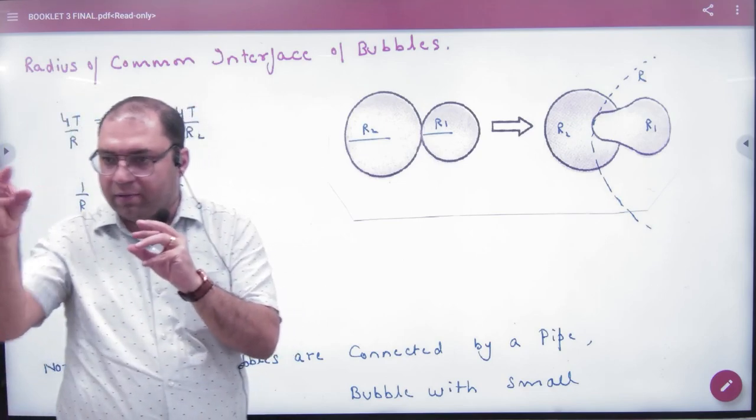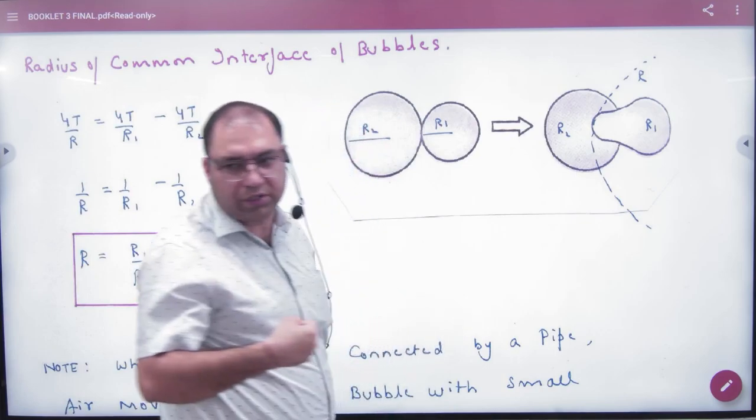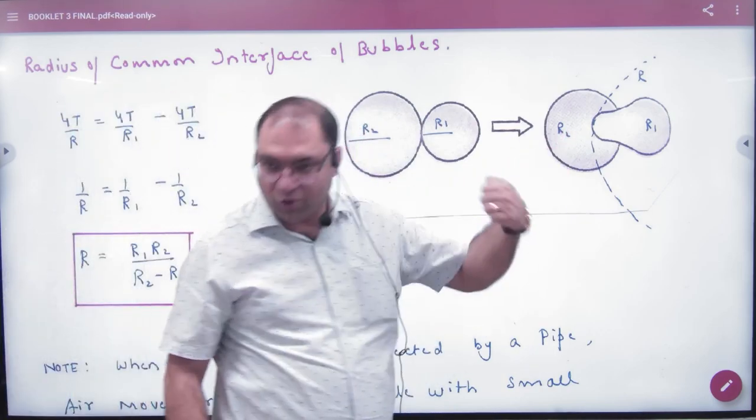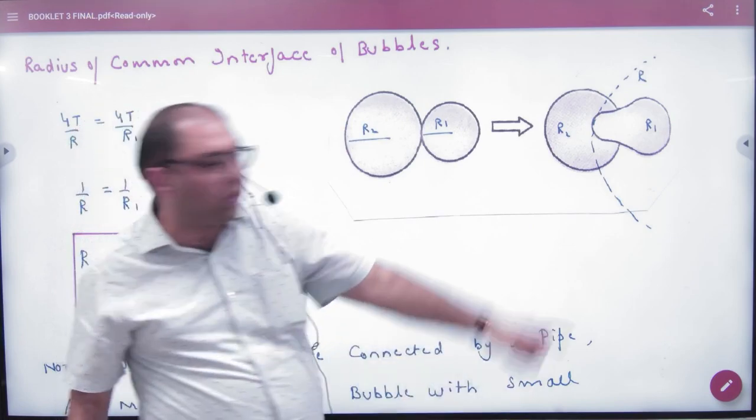If the small pressure is greater, the big bubble will be less. If the pressure is greater than here, it will distort, it will change its shape. It will change its shape like this because the pressure is more in the small. When the pressure is greater in the small, it will become such an interface.